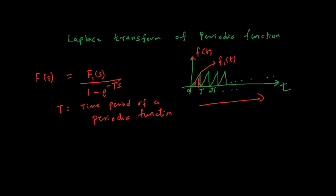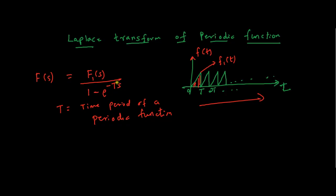So whenever a question asks you to find the Laplace transform of a periodic function, first identify the function F1(t) which repeats itself after time T. Find the Laplace transform of that F1(t) to get F1(s). Then the Laplace transform of the entire periodic function is simply F1(s) divided by 1 minus e raised to minus T·s, where T is the time period.